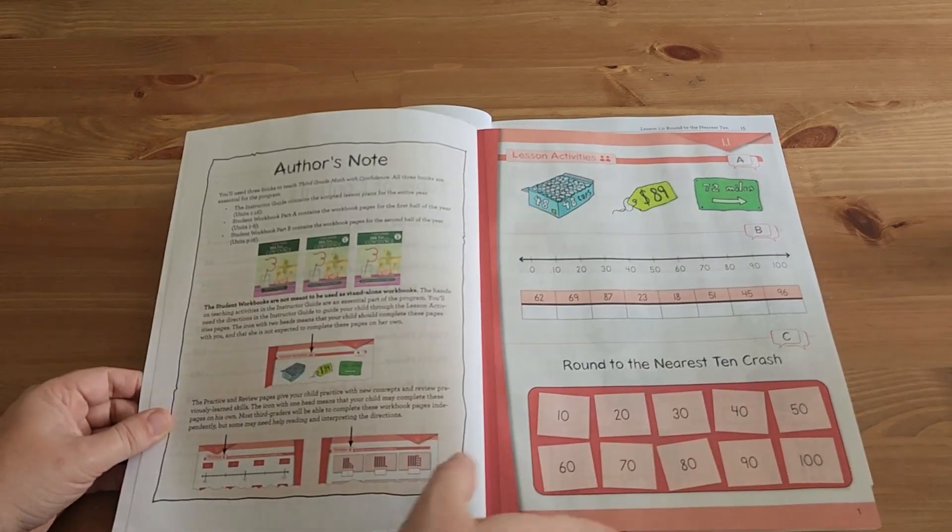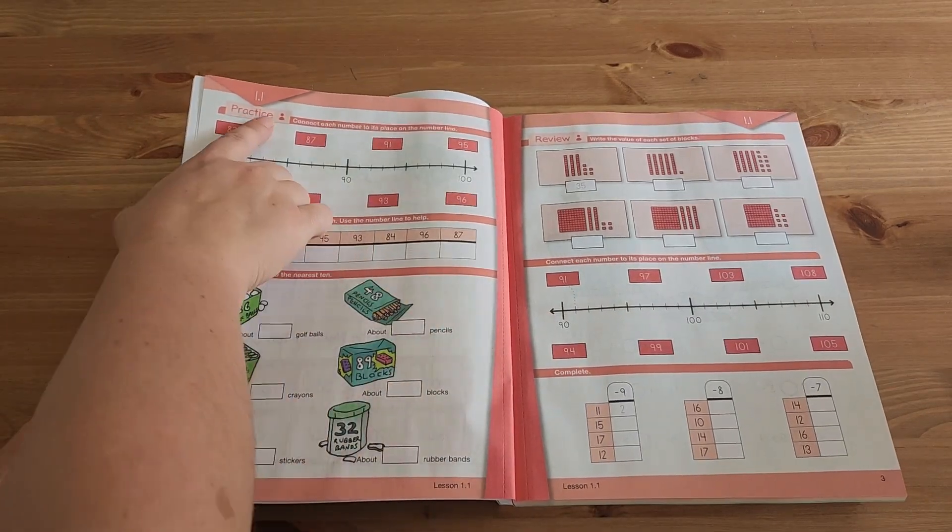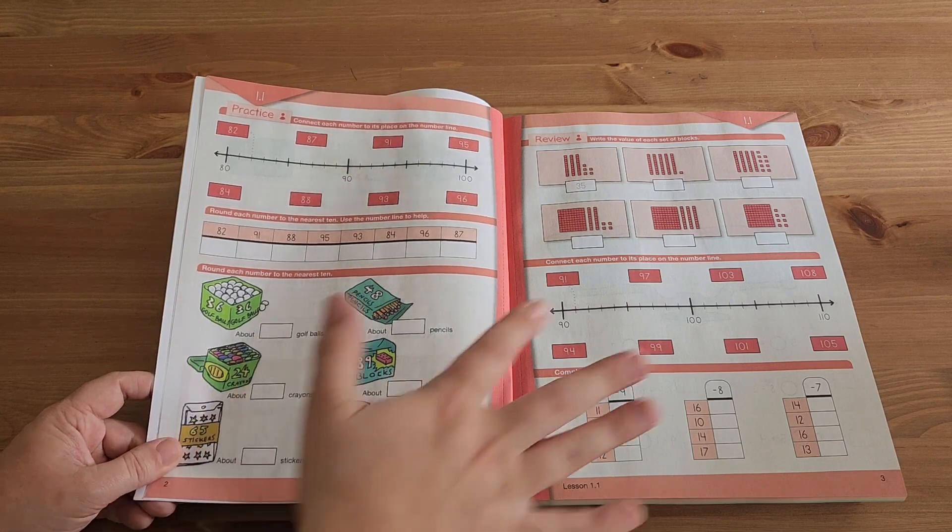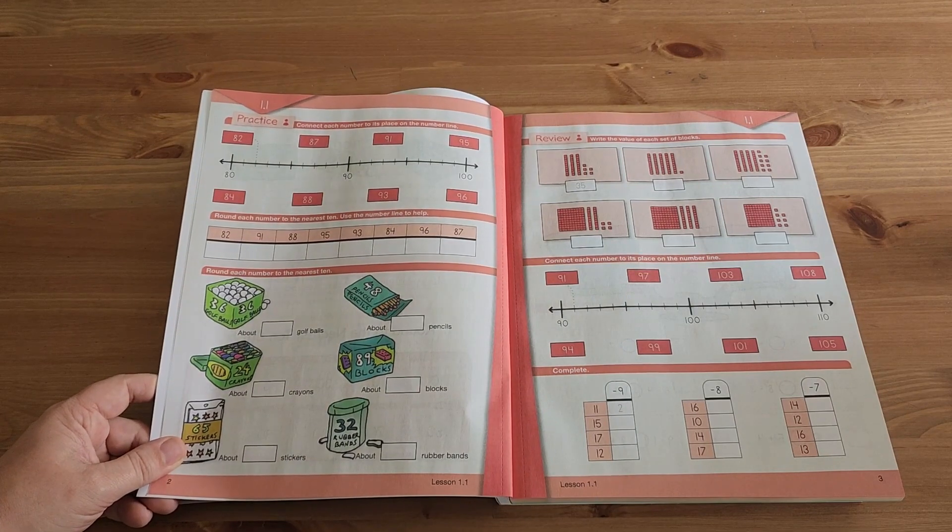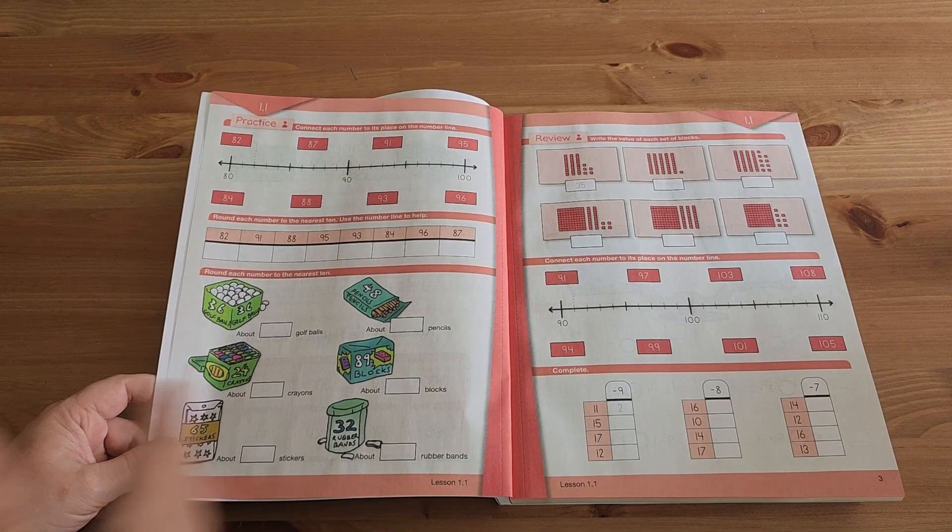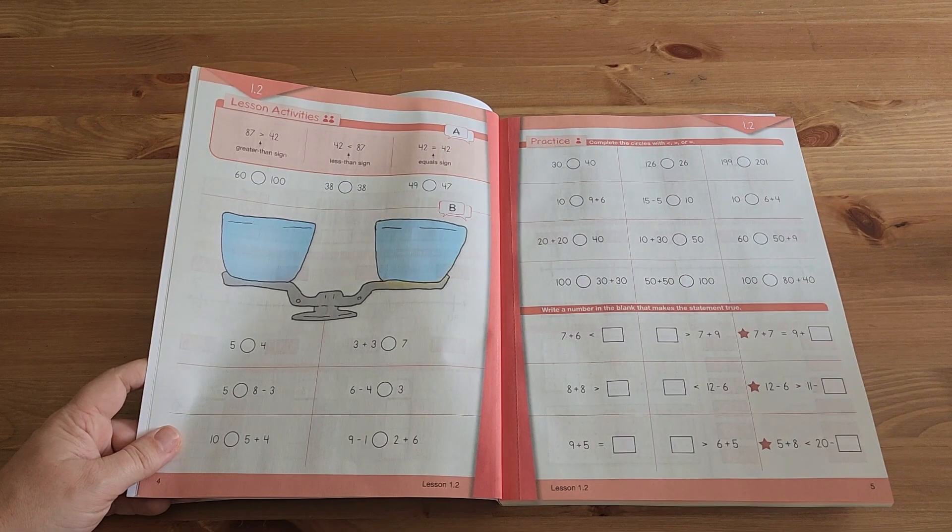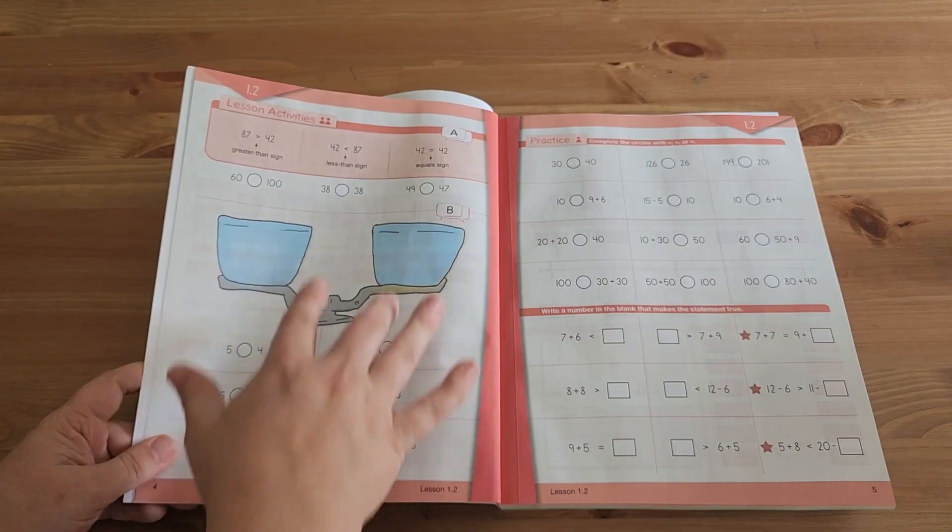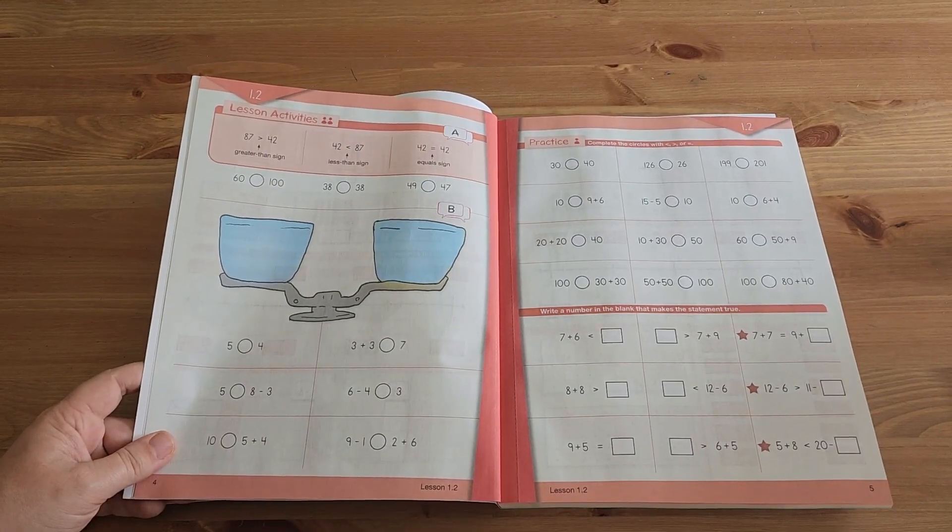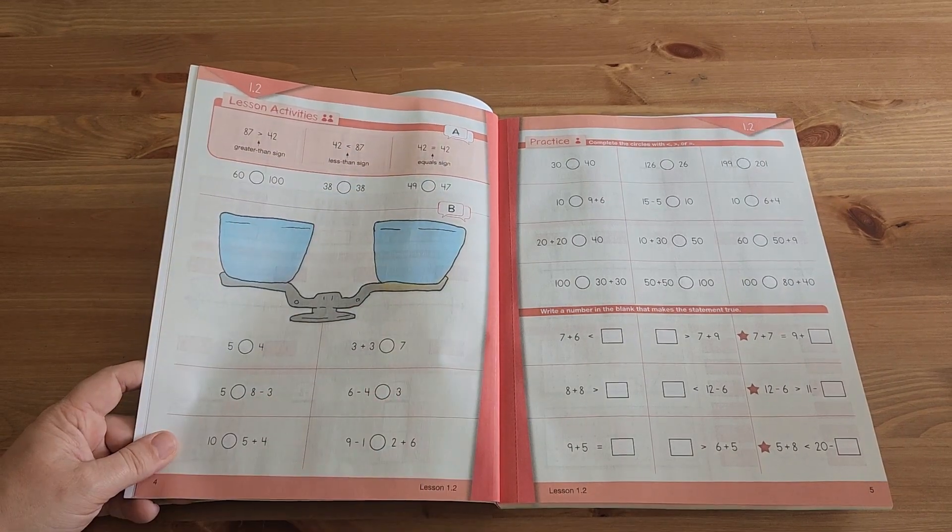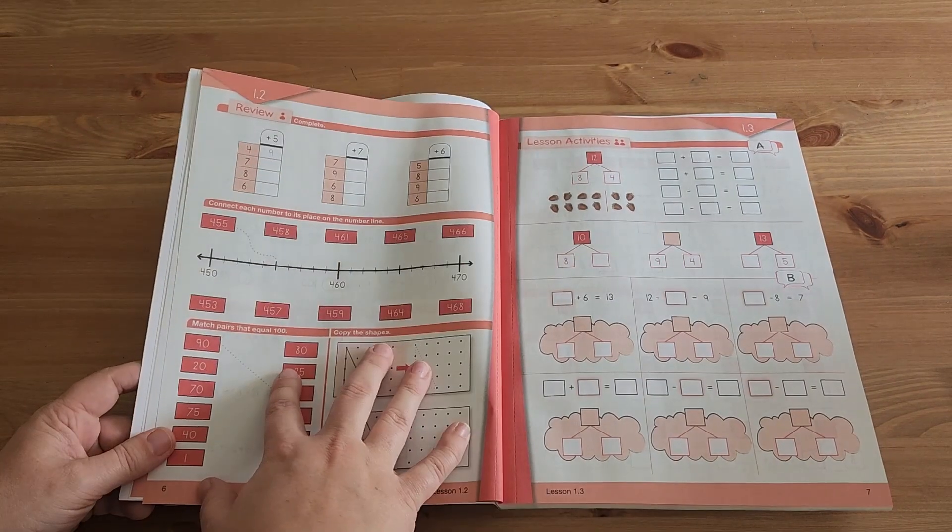And so what you'll do is you'll go through activity A and you'll read it out while your student is using activity A to help learn the lesson. And then you'll go to activity B and do that. And then activity C and do that. When they are done with these activities, they will flip the page and have a practice page that they are meant to do on their own. And a review page that they are meant to do on their own. So each unit lesson has three pages that will need to be done.